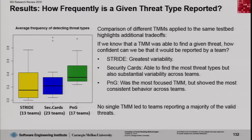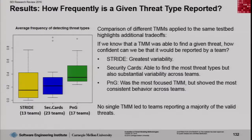The final measure looks at how consistently threats were reported across different teams — for all threats those methods were able to find, how consistently were they identified by different teams? I want all these bars to be as high as possible, meaning almost any team I put on the problem can find these threats. Persona Non Grata, despite missing many threats, was much more repeatable across teams — if the threats it finds are the ones you care about, it might actually be your best bet. STRIDE, which looked good on the previous chart, has a wide range: some things teams will find consistently, but some teams will simply not be effective at finding the threats that are out there.